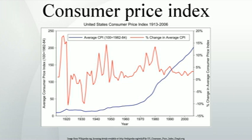Ideally, in computing an index, the weights would represent current annual expenditure patterns. In practice they necessarily reflect past patterns, using the most recent data available. Some countries have used a three-year average in recognition of the fact that household survey estimates are of poor quality. Infrequent reweighting saves costs but delays the introduction of new types of expenditure into the index. For example, subscriptions for Internet service entered index compilation with a considerable time lag in some countries.